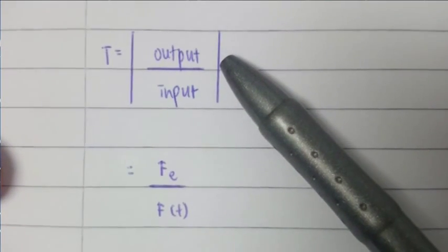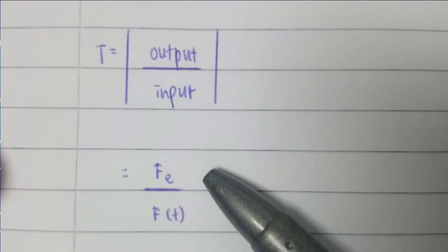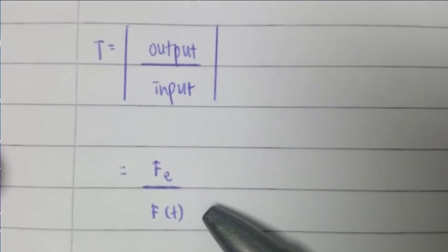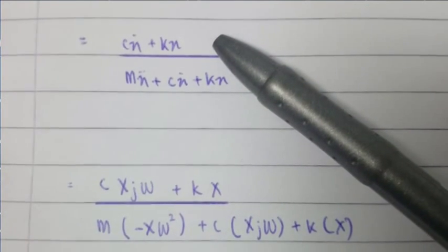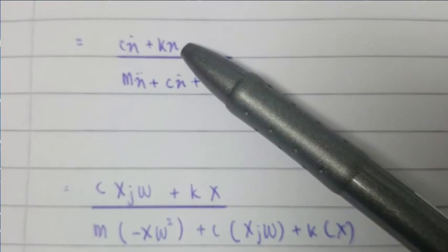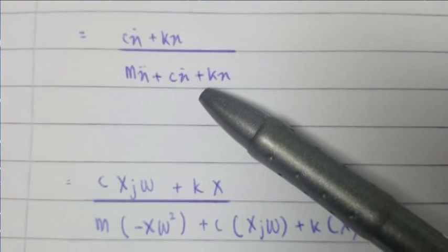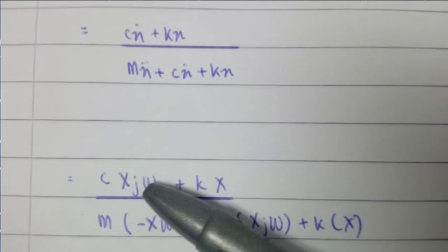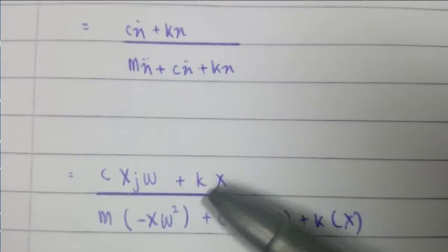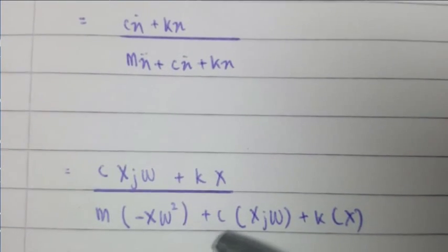This is the control transmission path where the output is divided by input, where Fe, the output force divided by F(t), the input force. We get the equation: (Cjω + K)x over (M(-ω²) + Cjω + K)x.